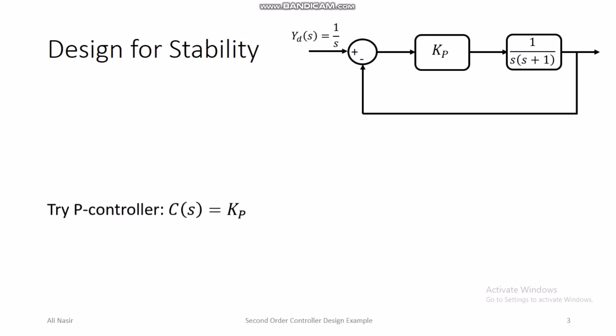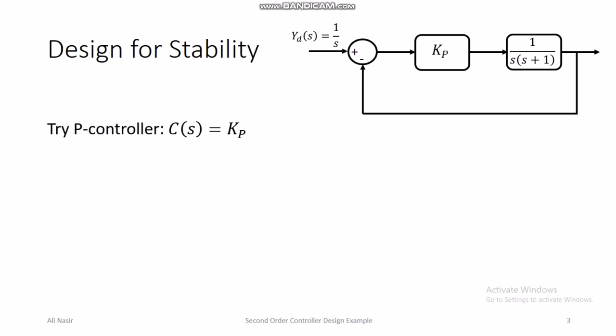First, we design for stability. We try a P controller — please remember that in all controller design problems the simplest possible controller should be applied, because simpler designs are easier to implement practically. We always look for the simplest possible controller. If the P controller fails to achieve certain specifications, only then do we go for more advanced controllers. Here C(s) = kp, a simple constant gain.